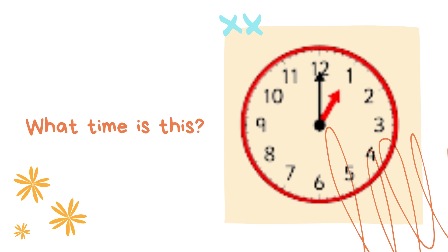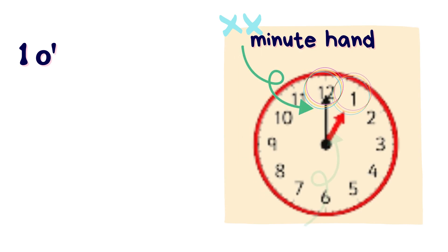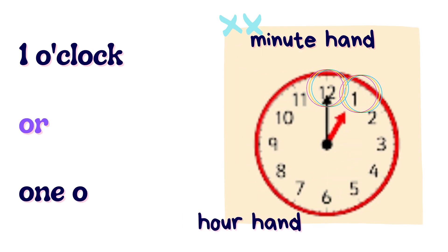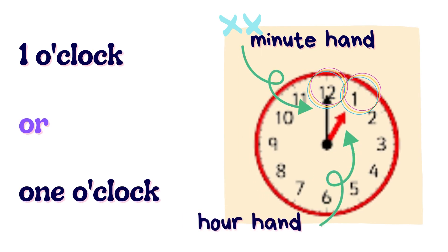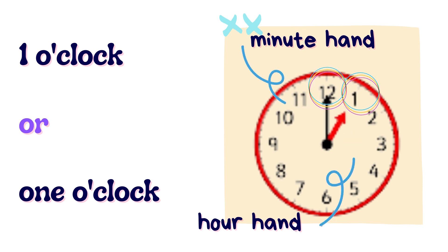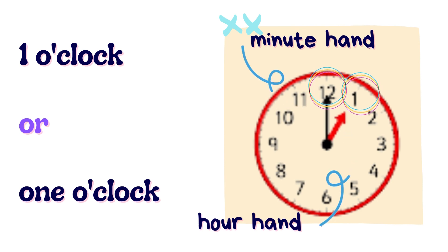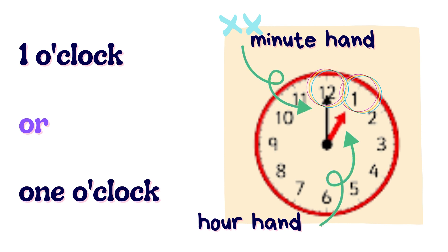Look at the clock face now. Can you tell what time is this? The hour hand is pointing to number 1. So this is what we call 1 o'clock.